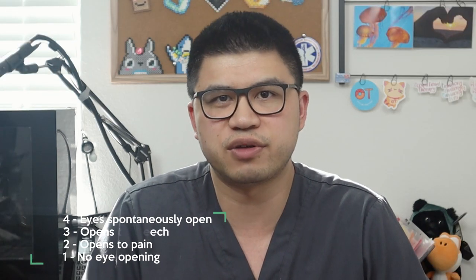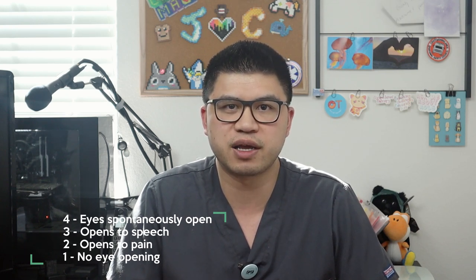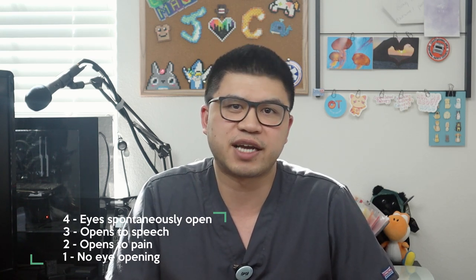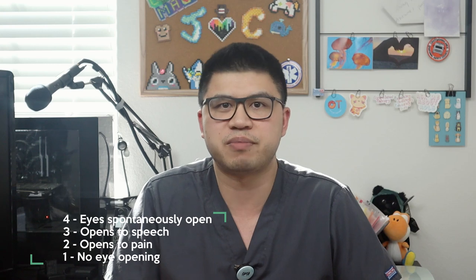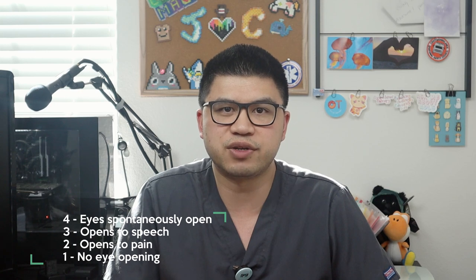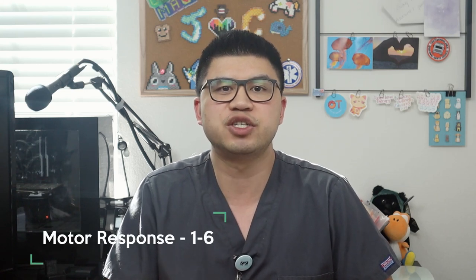Let's calculate GCS. Eyes can be spontaneously open, like how I have them open — that's a 4. Eyes can also open to a stimulus such as you calling their name, which would be a 3. Keep in mind that a person sleeping is not considered a deficit, so they would still be a 4 because when they're awake their eyes are likely to be open. A score of 2 means the person does not respond to your voice and you would have to pinch them for their eyes to open — this is a painful stimulus. Other ways to introduce painful stimuli include pinching the nails or a sternal rub. A score of 1 means that no matter what you do, their eyes won't open and you would have to pry them open, such as with a pen light. If you introduce a painful stimulus such as a pinch, don't forget how they respond because it is used later in the motor response section, which goes from 1 to 6.